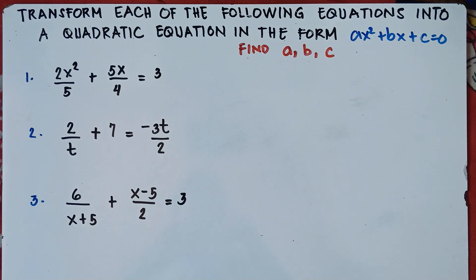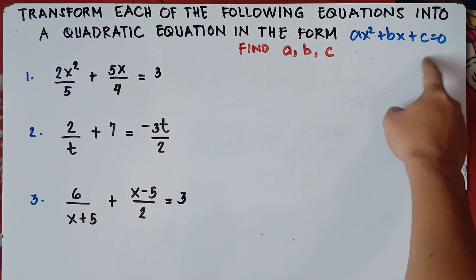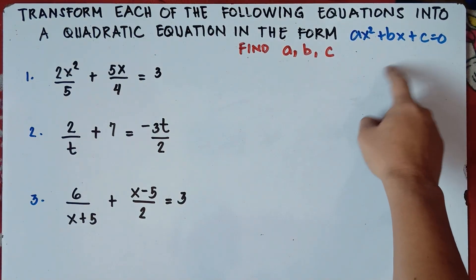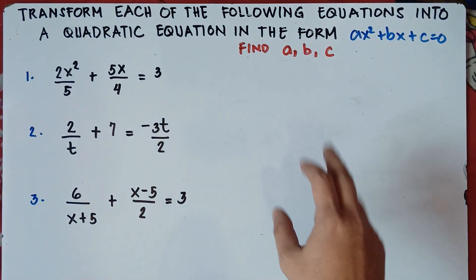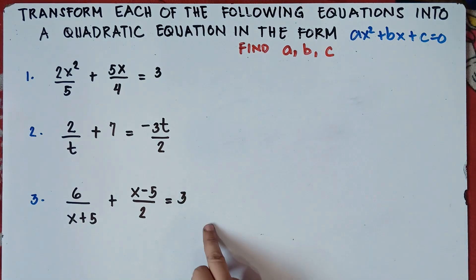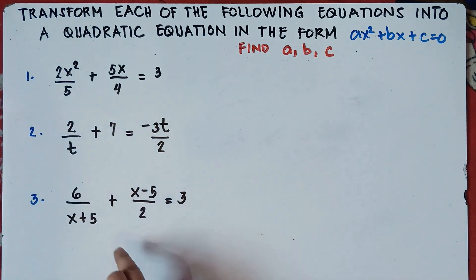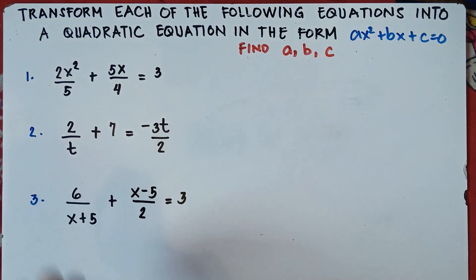This is already part 2 of our video. Feel free to see the link in the description down below with regards to part 1, where we covered basic samples of equations and transformed them into the general form ax squared plus bx plus c equals 0 — the general form of a quadratic equation. Now for this part, this is quite tricky since we're dealing with fractions with rational equations. The thing we will do is eliminate the denominators by finding the LCM, the least common multiple.